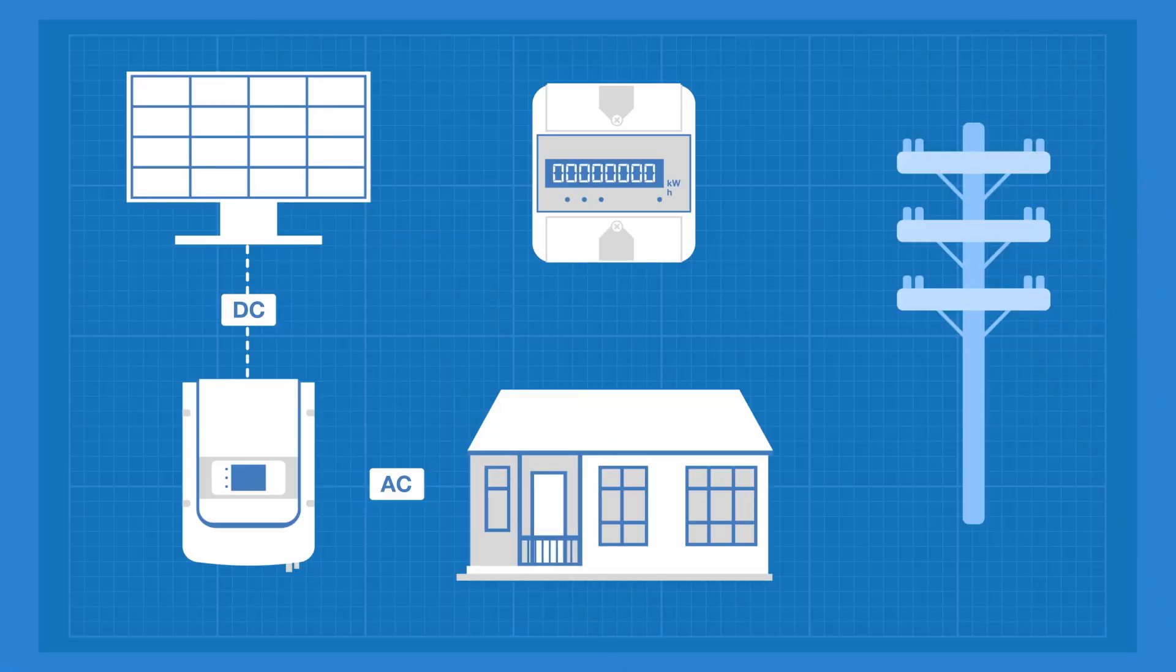An inverter converts direct current from panels into alternating current that is safe for all the appliances in your house. It also interacts with the commercial grid and keeps track of your system's production. It's the most complicated part of a solar system and also the most vulnerable, so it really makes sense to pick a good one.